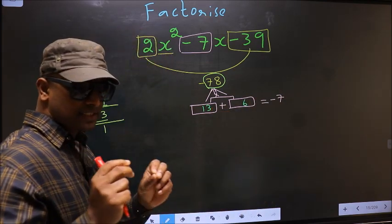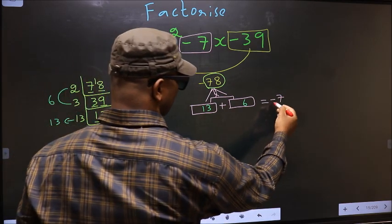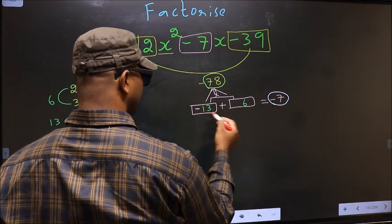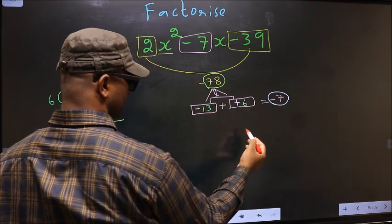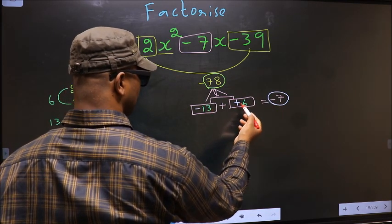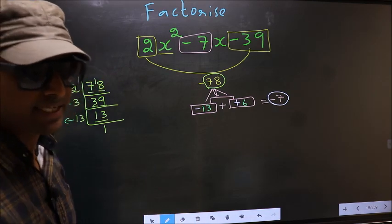Now we should adjust the signs. What I mean is over here we have -7. To get -7 we should place negative here and plus here. -13+6=-7. -13×6=-78. So we have adjusted the signs.